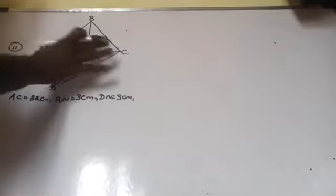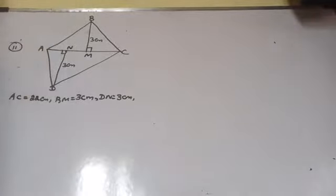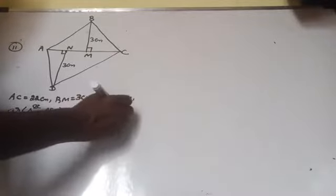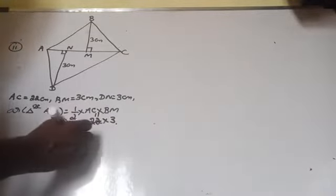For triangle ABC, the base is AC and the height is BM. Area of triangle ABC is equal to half into base AC into height BM. That is half into 22 into 3. So 11 into 3 is 33 cm².